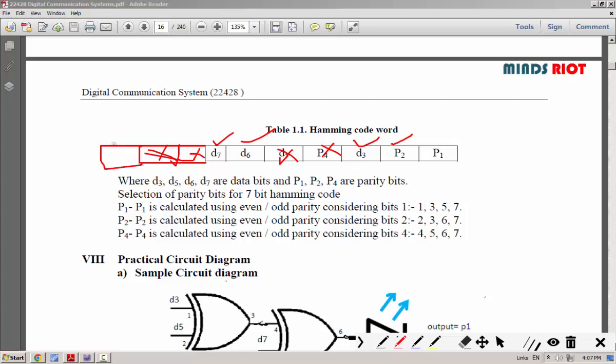Likewise, similarly for 4th parity bit, start from P4 bit, check 4 bits and skip 4 bits.